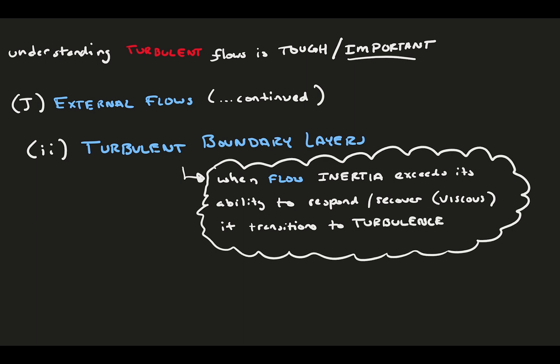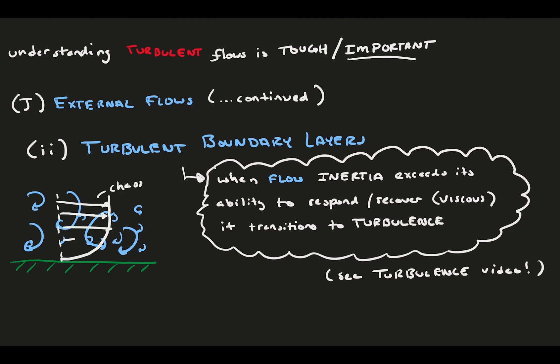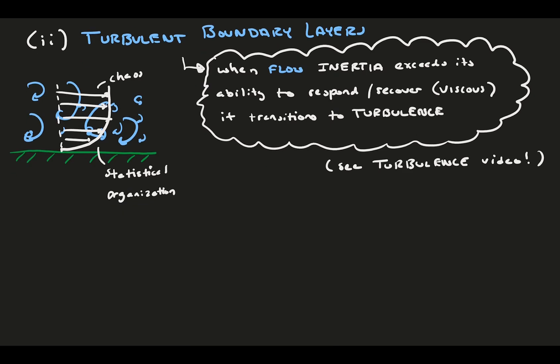This is because the inertia of the flow exceeds its ability to respond to disturbances via the viscous forcing. If you haven't yet, please check out my turbulence video as a more general background. While flow is chaotic and unsteady, there is statistical organization in this turbulent flow. In other words, the flow in the average state is behaved and relatively predictable.